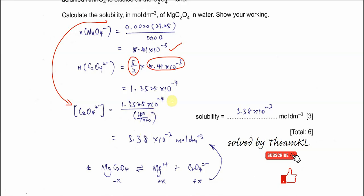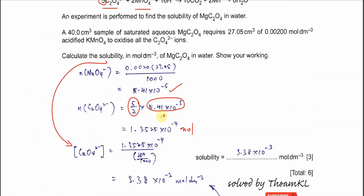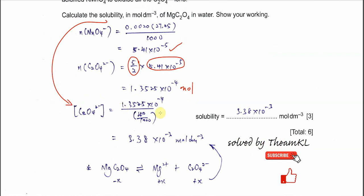Once you get this mole then you can get the concentration. Because in the question it already said 40 cm³, so you just use the mole over 0.04. After that you get 3.38 times 10⁻³ mol/dm³. The concentration of this ethanedioate can represent the solubility.